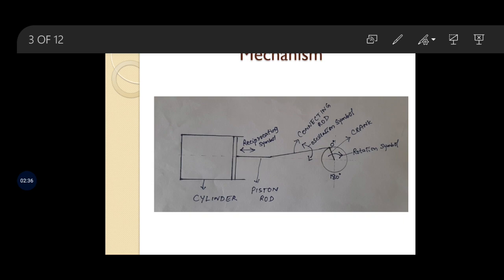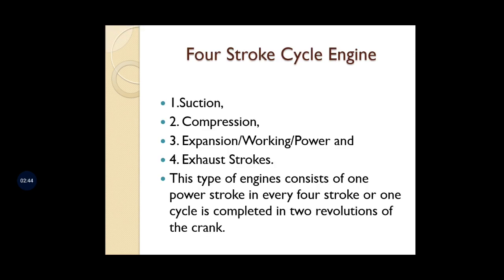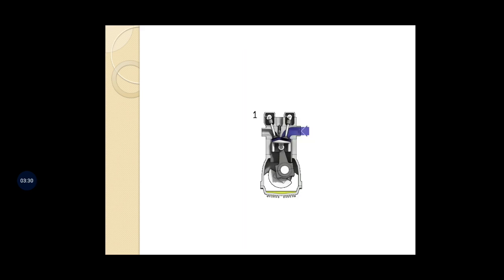The crank goes from 0 to 360 degrees, then again 0 to 360 degrees, making two revolutions to produce one power stroke. In one power stroke, thermal energy is liberated upon completion of two revolutions of the crank. So in summary: suction, compression, expansion, and exhaust are the four strokes, and the crank makes two revolutions to produce one power stroke.